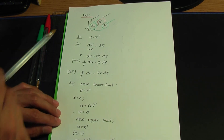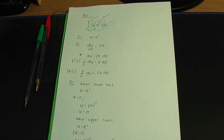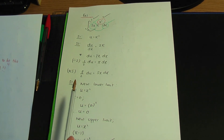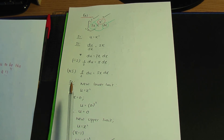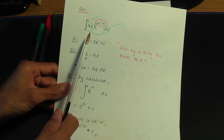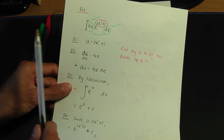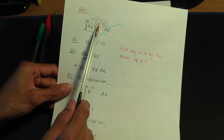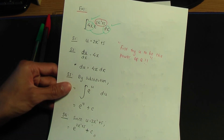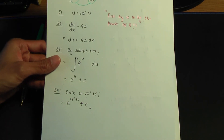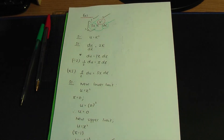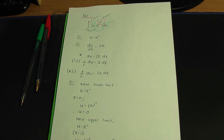That ends this example. The most important thing in this video is: if you can't use the standard result for exponential functions when integrating, try substitution next. My tip for this video is to first try u as your substitution to be the power of your exponential function, and then continue the process of substitution. This will most probably work. That ends this video — I hope you enjoyed it. A like is very much appreciated, and I hope to see you again. Thank you.